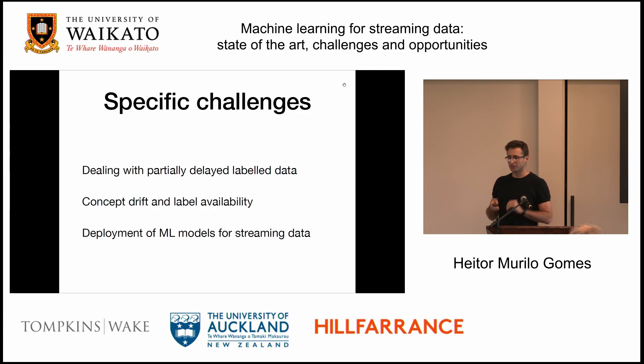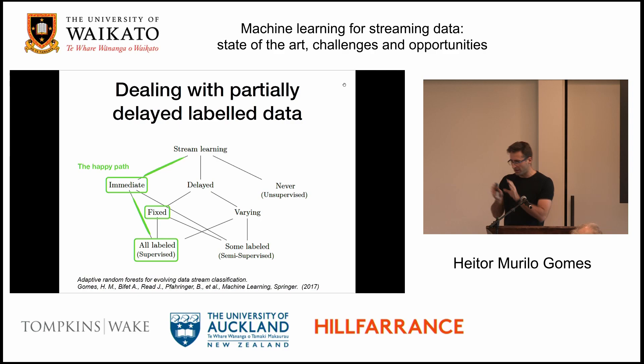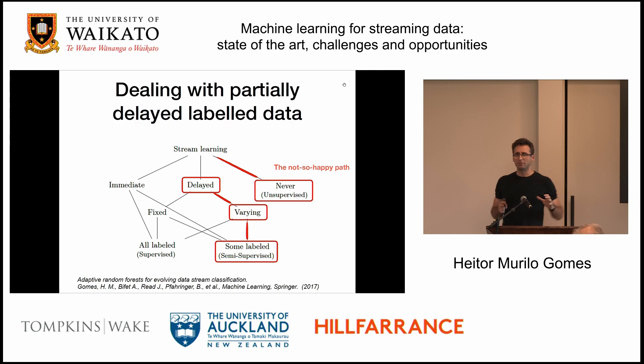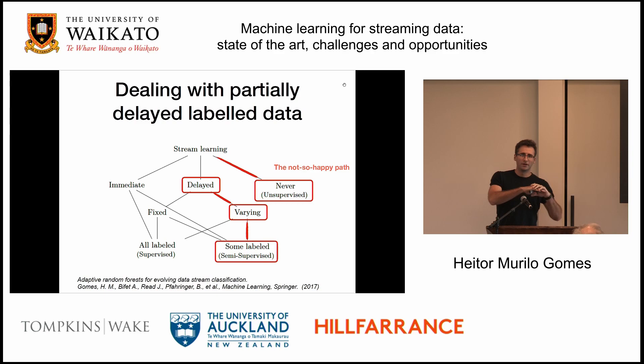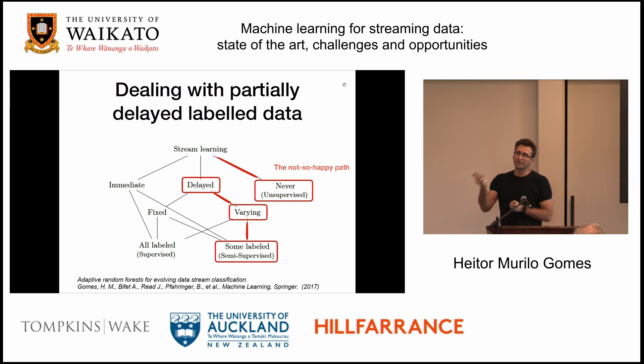We have the happy path — immediate labeling, everything is supervised — and the not-so-happy path, where you have unsupervised and semi-supervised settings. The nice thing about unsupervised is that some things that don't make sense to represent with supervised learning work very well there. With supervised we have another spectrum of things that works, and with semi-supervised usually nothing works. But we can put it all together and try to get some information from the structure of the data without actually having access to the labels.